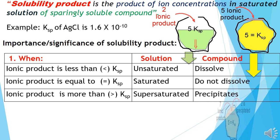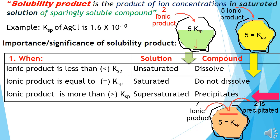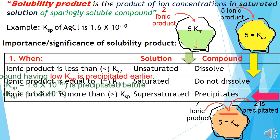The third condition is when the ionic product is more than Ksp, meaning ionic product greater than 5. In this condition, the solution is supersaturated.